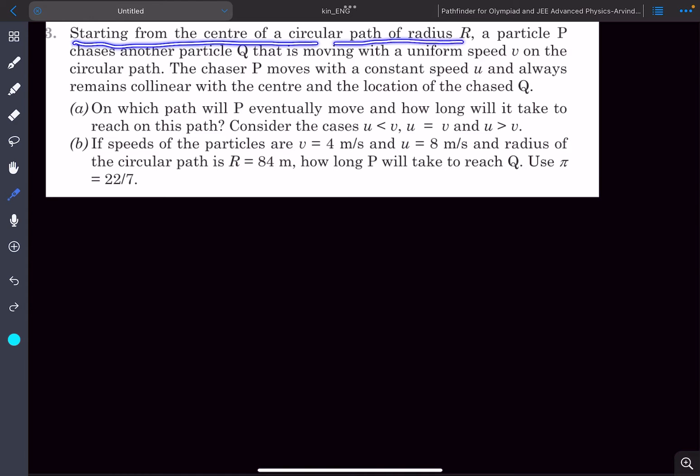Starting from the center of a circular path of radius R, a particle P chases another particle Q that is moving with a speed v on the circular path. The chaser P moves with a constant speed u and always remains collinear with the center and the location of the chased Q.